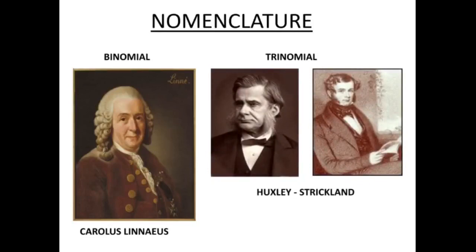In binomial nomenclature, two names are used: the first name is the genus name and the second name is the species name. In the trinomial naming system, three names are used: the first is the genus name, the second is the species name, and the third is the subspecies name.